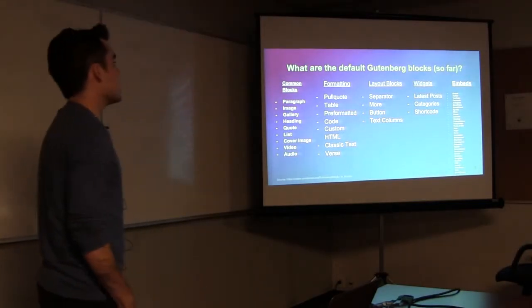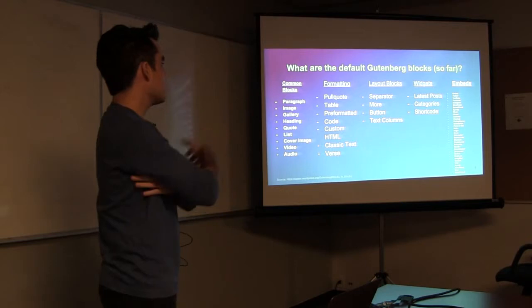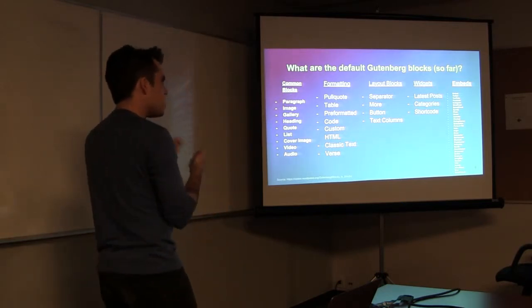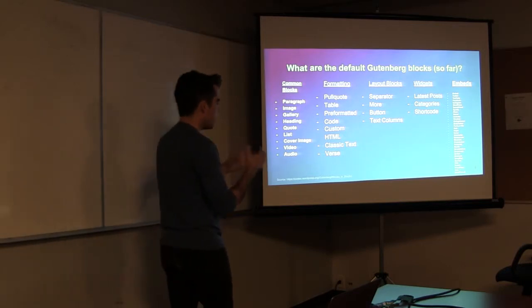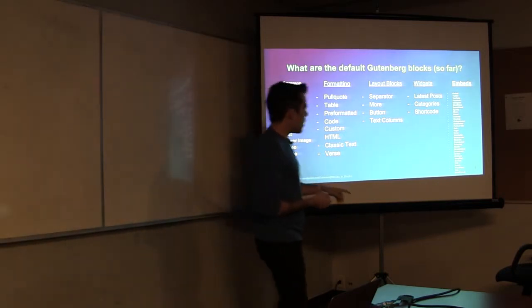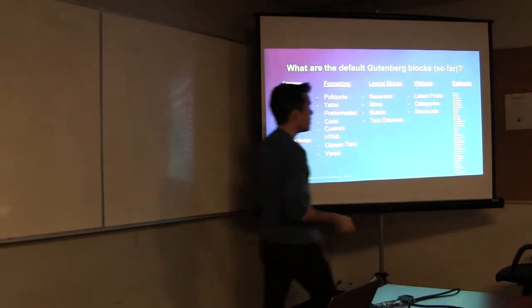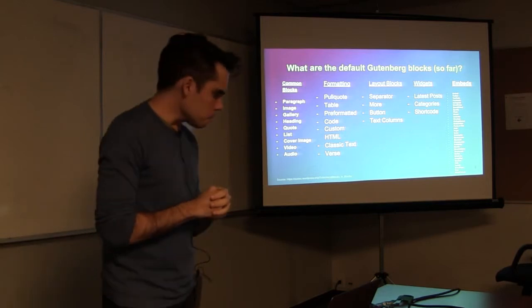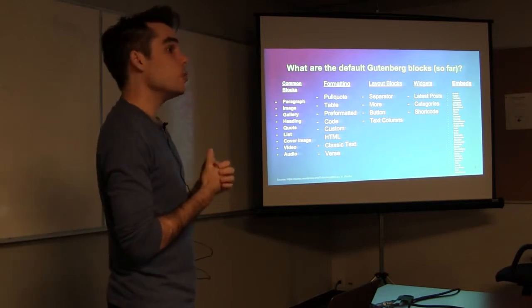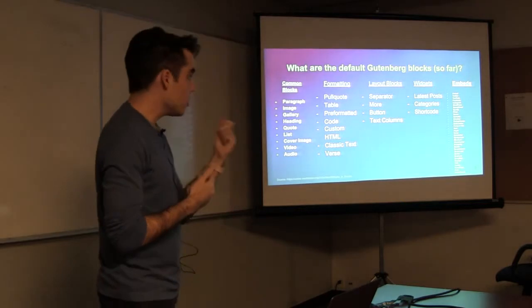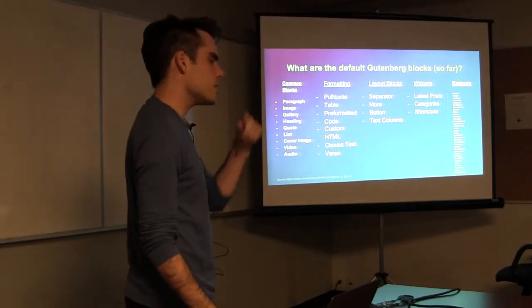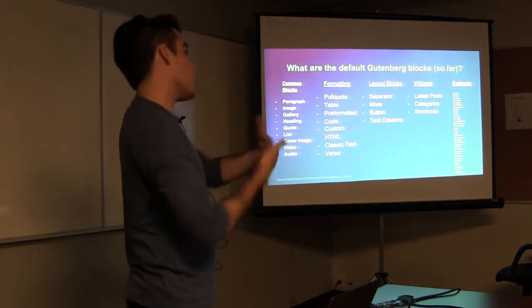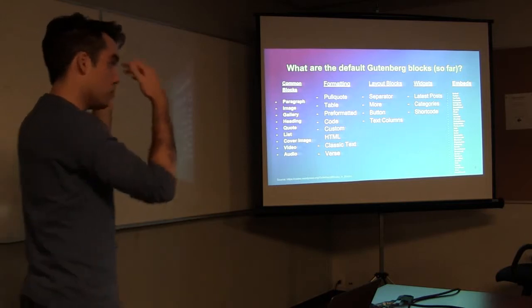The blocks you get out of the box with vanilla Gutenberg — you get this many blocks. A lot of them you can achieve the same effect with the classic editor. I feel there are a lot of new ones in the embeds, and it's a really cool feature — like being able to include a YouTube video from the block. These are all the blocks you get for free. If you install plugins or a theme, you're going to have even more blocks.